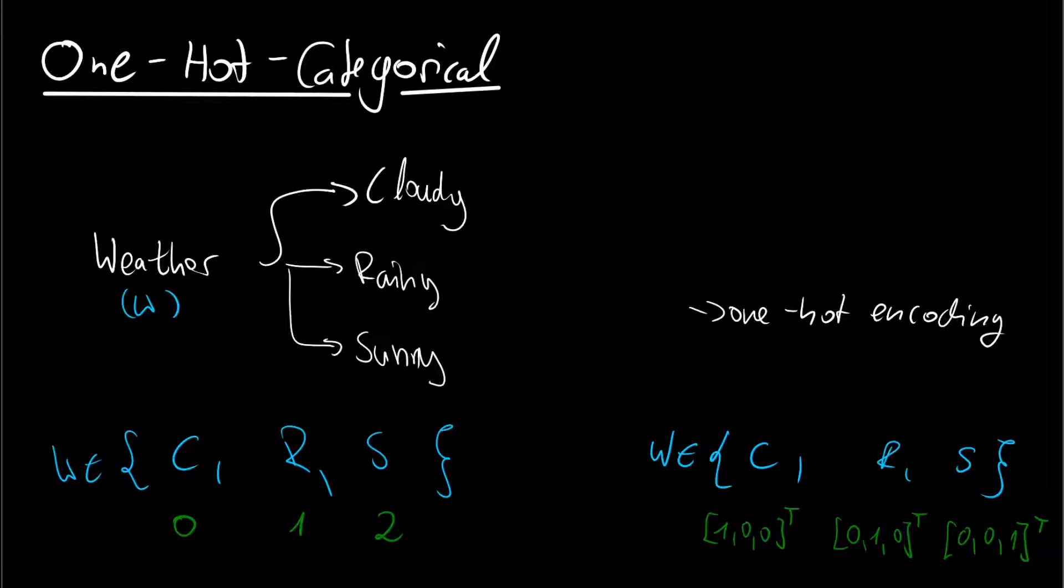Hi, welcome to a new video. Today we want to look at the one-hot categorical distribution. For this we will introduce the probability mass function and then we will see how it is implemented in TensorFlow probability.